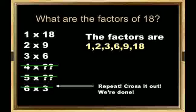Actually, 6 times 3 is the repeat number, so this is also a factor, but we have already written 3 times 6. So the factors are 1 times 18, 2 times 9, 3 times 6. It means the factors of 18 are 1, 2, 3, 6, 9, and 18. When we get repeat numbers, we have to stop.